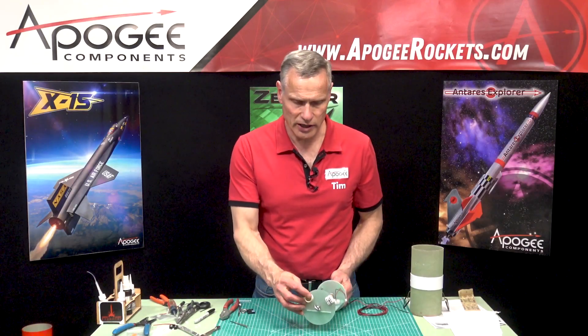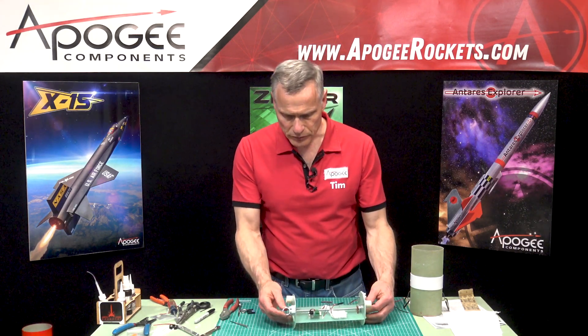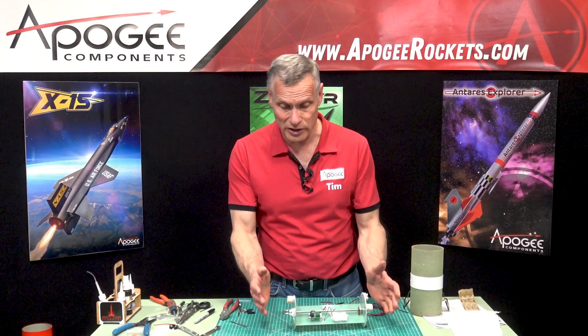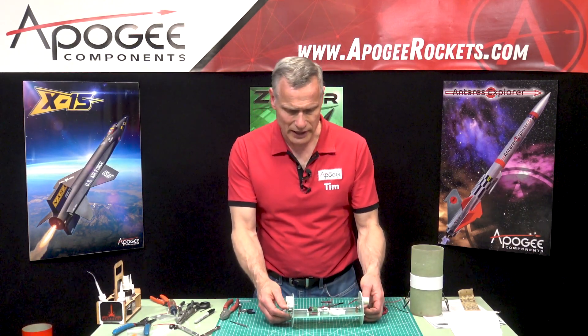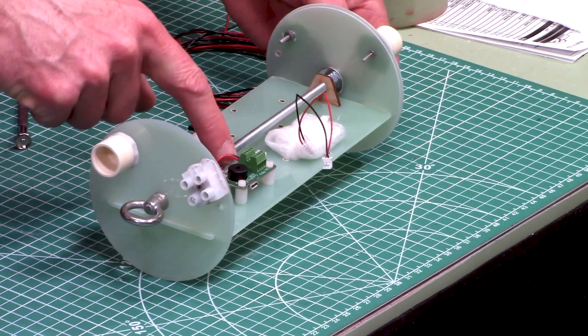Okay, I've got my ejection canister on and my terminal block on, and I have test fitted it in the rocket and everything is fine where it is. So my next thing is to run wires from this terminal block to the altimeter.